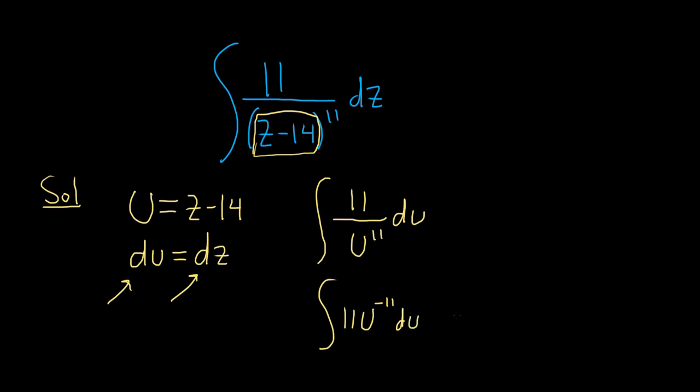So now we're in a good place. Okay, the 11 just hangs out. So 11, and then we use the power rule on this piece here. So we add 1 to the negative 11, so it's u to the negative 10 over negative 10. Right, you divide by it. Just add 1, you get negative 10, and then divide by that, and plus c.